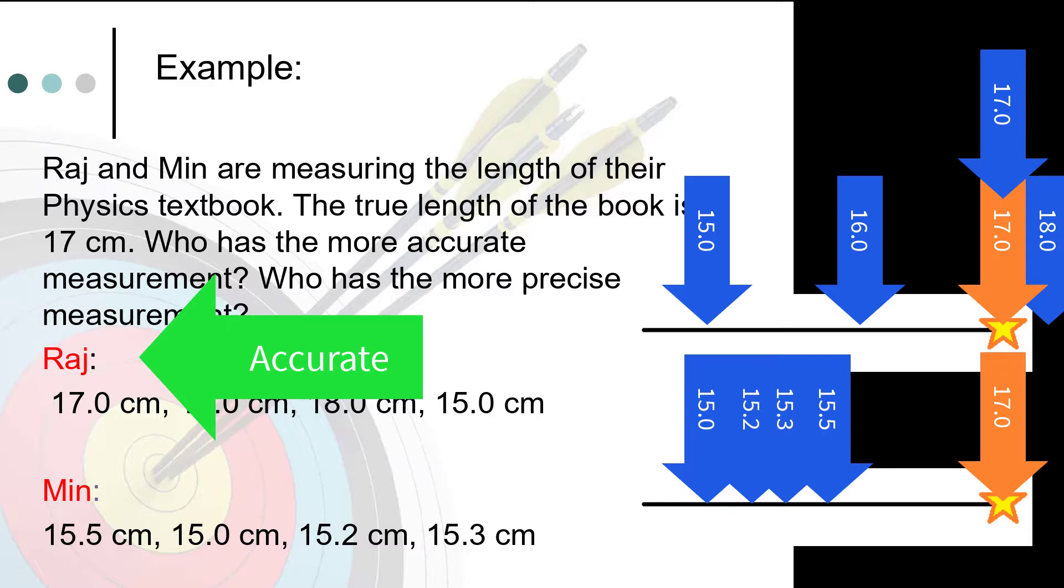Min's measurements are not near to the target value. They are, however, near each other. Min's measurements are the same until the first decimal place. Min's measurements are more precise than Raj's measurements. They are closer to one another.